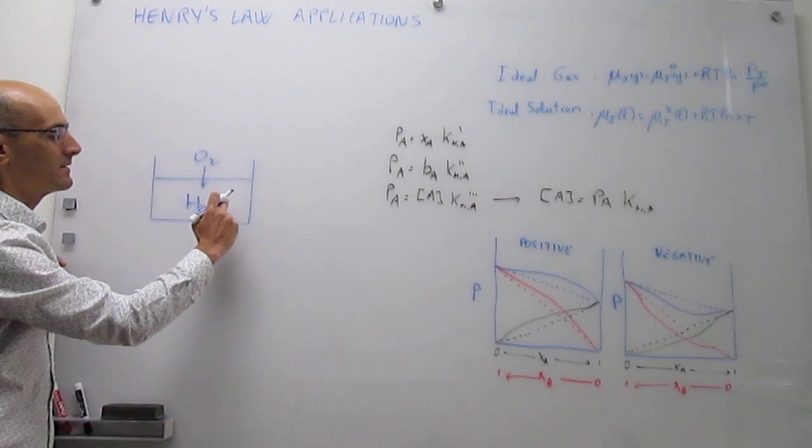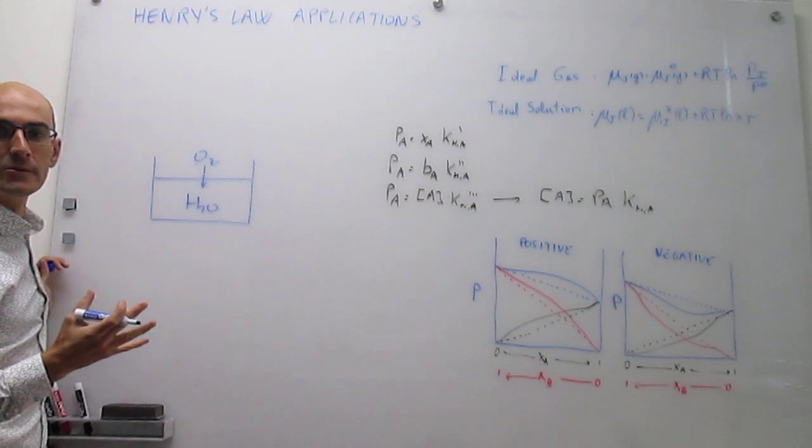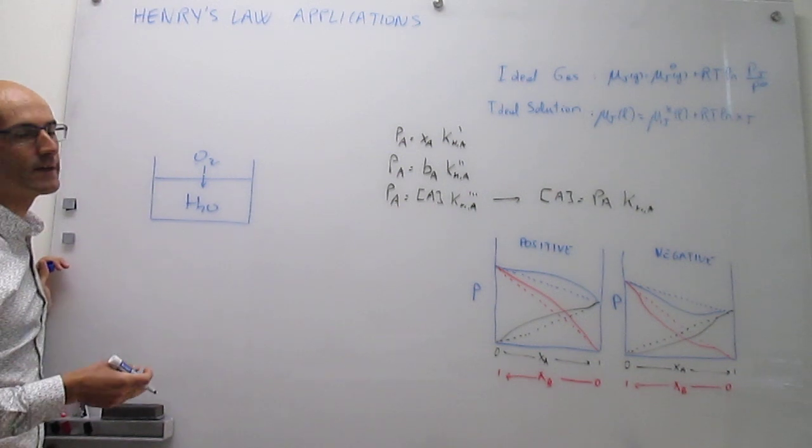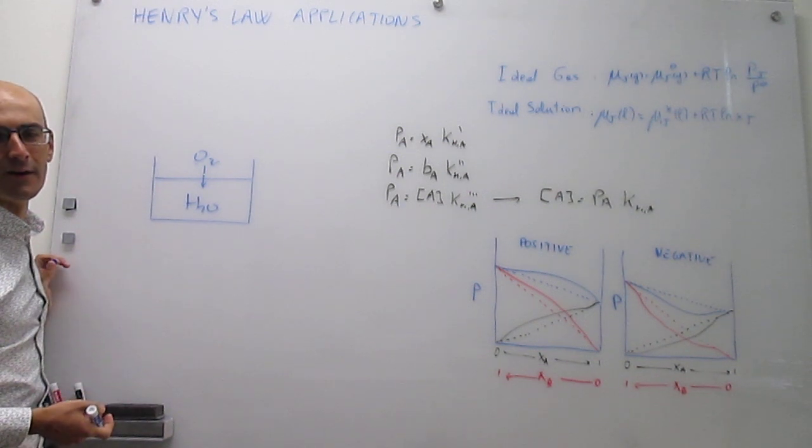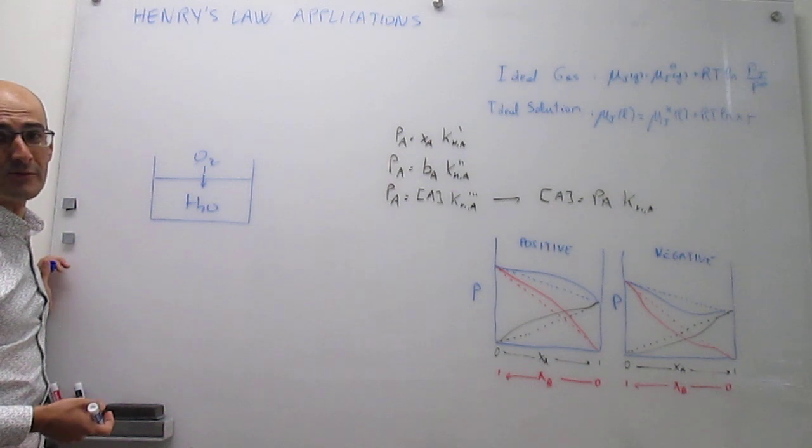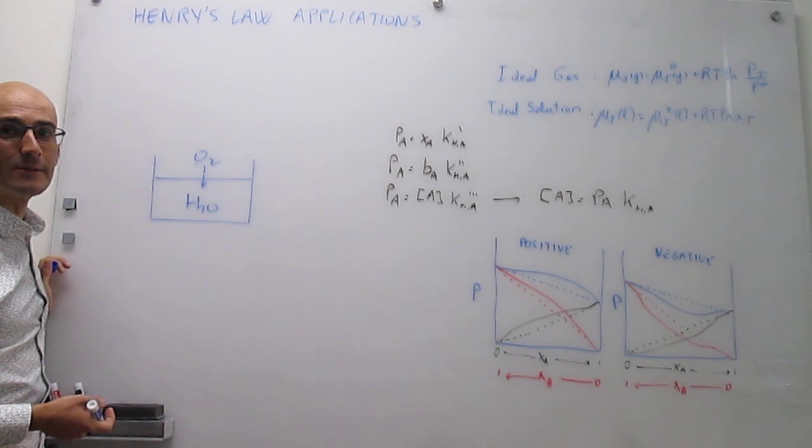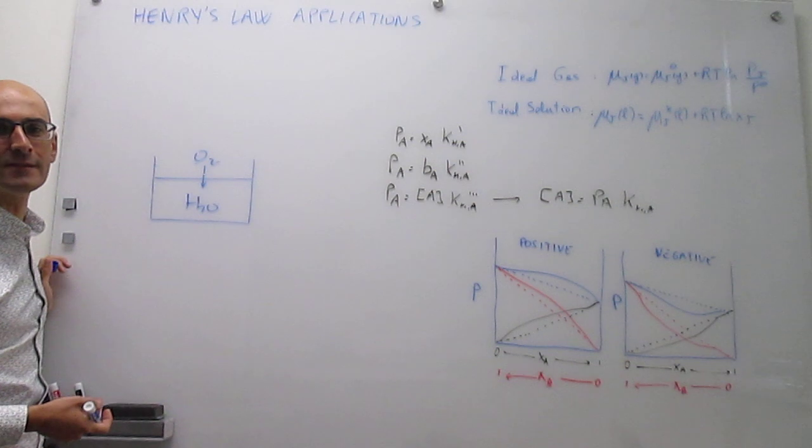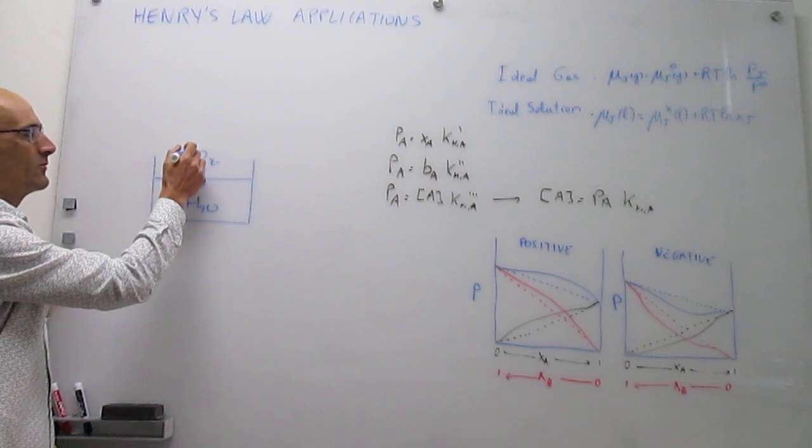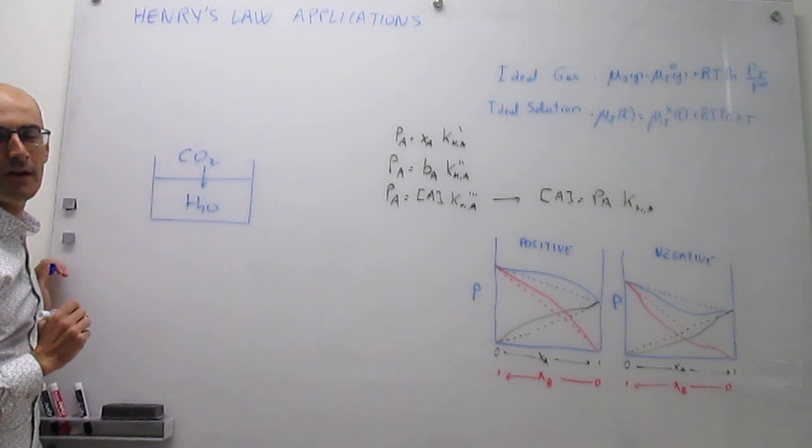So again, the amount of oxygen that you have dissolved in oceans and rivers is controlled by the Henry's law of oxygen. But of course this applies not only to oxygen, it applies to any gas that you have in the atmosphere. So for example, it would also apply to CO2.